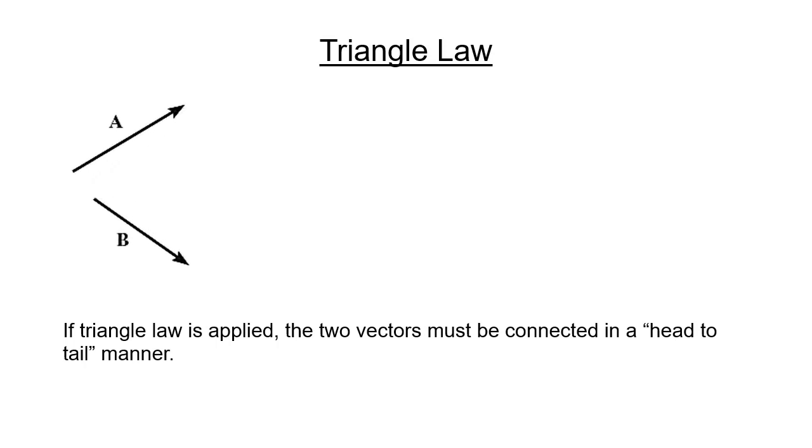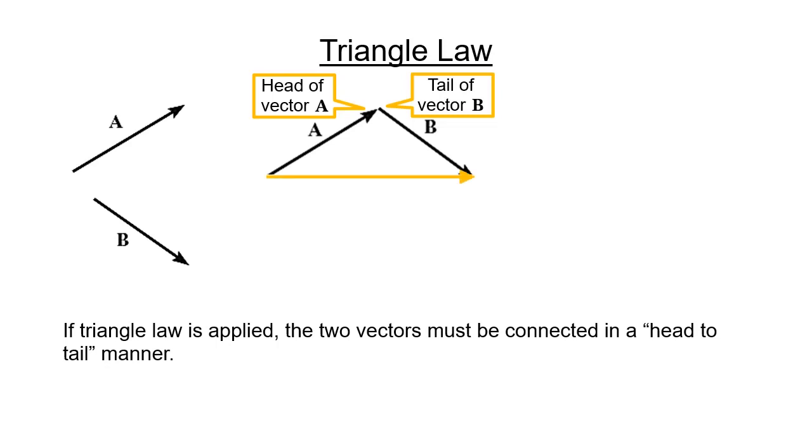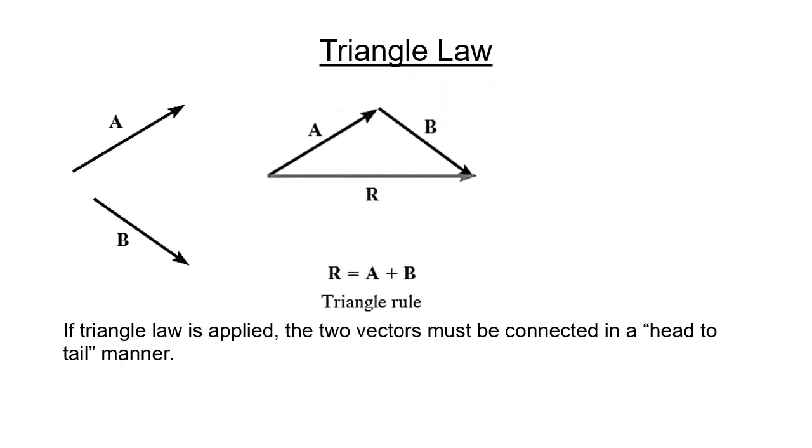Using same vectors, vector A and vector B, connect the head of vector A to the tail of vector B. The resultant R is obtained which is measured from the tail of vector A to the head of vector B. The resultant R is equal to A plus B.